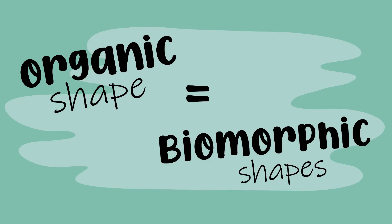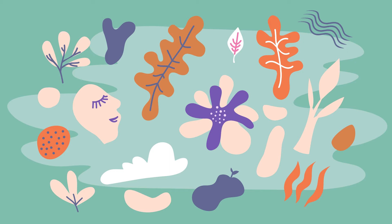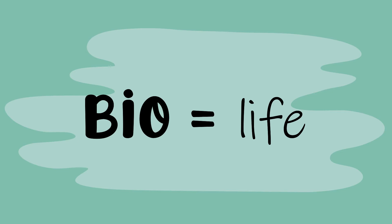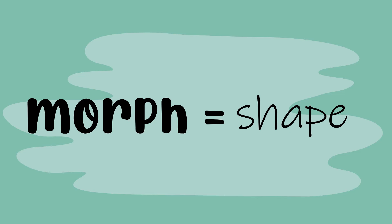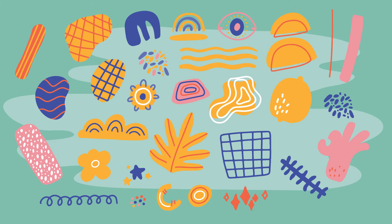Organic shapes are also known as biomorphic shapes. They are found in nature. These shapes may look like leaves, flowers, clouds — things that grow, flow and move. The term biomorphic means life shape: bio meaning life and morph meaning shape. Biomorphic shapes are often rounded, irregular, free forms and often one of a kind. They seem to follow no rules. Organic shapes generally do not have a name associated with them.